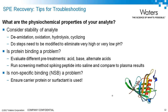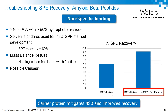Protein binding was discussed earlier as a significant issue. Things to consider include acids, bases, strong acids, and denaturants such as guanidine hydrochloride or urea. A quick way to determine if you have a protein binding problem is to compare recovery in a saline solution with carrier protein to a plasma solution — if recovery is lower in plasma, you likely have a protein binding problem. For nonspecific binding, always ensure you use carrier protein.